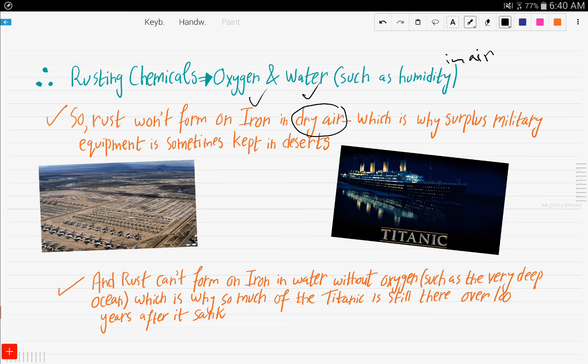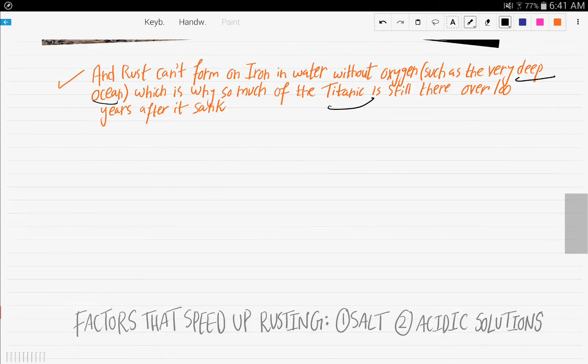Rust needs oxygen. And so rust can't form on iron in water without oxygen, such as the very deep ocean. So in deep ocean, there is no oxygen. And that's why much of the Titanic, the great Titanic ship that we all know about and an Oscar winning movie was made about, is still there. The remains of the Titanic are still there in the deep ocean, even though it has sank from over 100 years ago. It's because it is in deep ocean and in deep ocean there is no oxygen. And so rust is not formed and so it will remain almost like in its original condition.